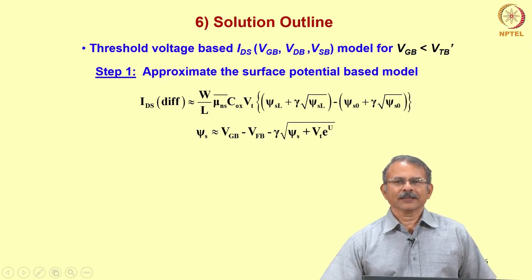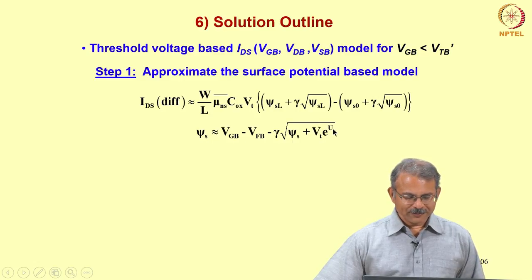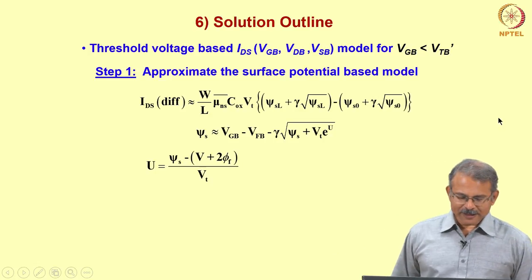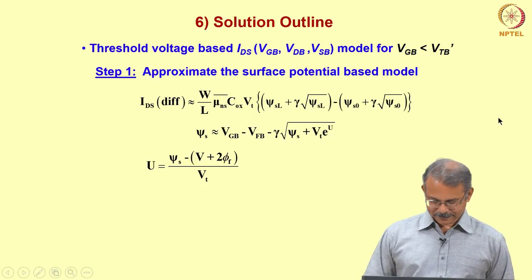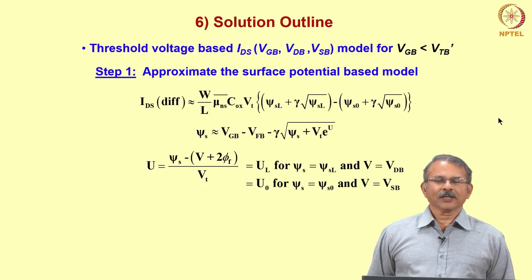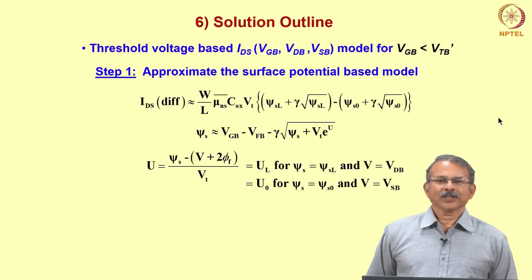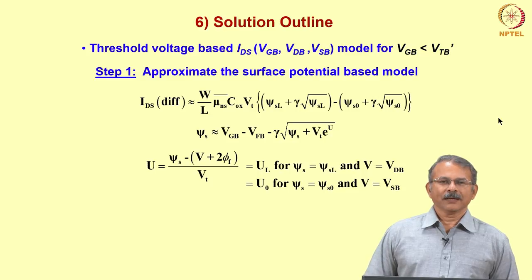The first step is to introduce a normalized potential variable u, where u = (ψs − v − 2φf) / Vt. The suffix L denotes the normalized potential for ψs = ψsL and channel voltage v = Vdb, while the suffix 0 represents the condition for ψs = ψs0 and v = Vsb — that is, the condition at the source.